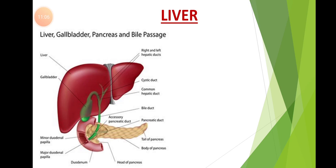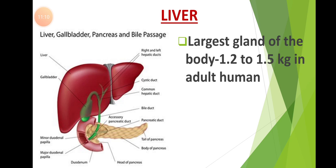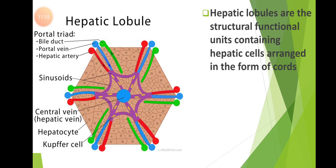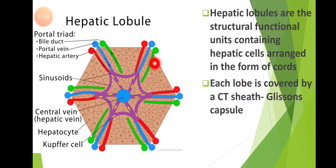Coming to the next gland — the liver. As you know, the liver is the largest gland of our body. It weighs about 1.2 to 1.5 kg in adult humans. It has two lobes and is a bilobed structure. It contains a number of hexagonal units called hepatic lobules, which are the structural and functional units of the liver. These contain hepatic cells (hepatocytes) arranged in the form of cords. Each lobe is covered by a connective tissue sheath called Glisson's capsule. You can also observe sinusoids in between the cords.